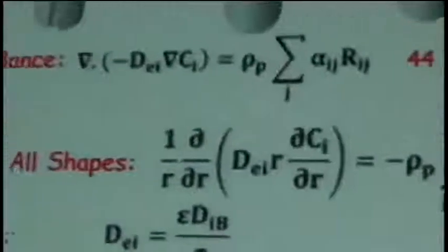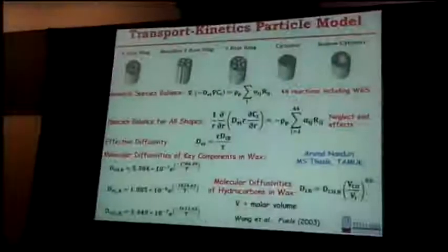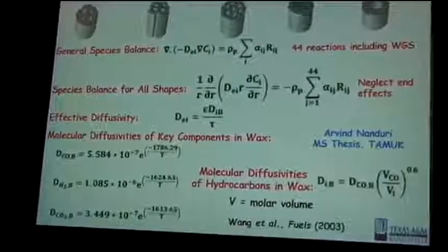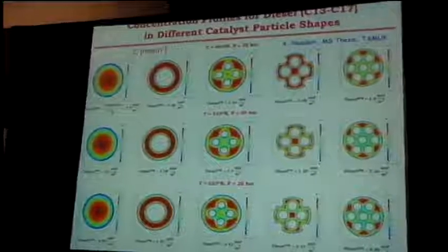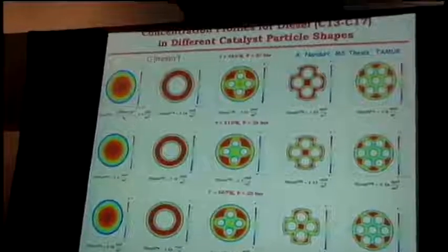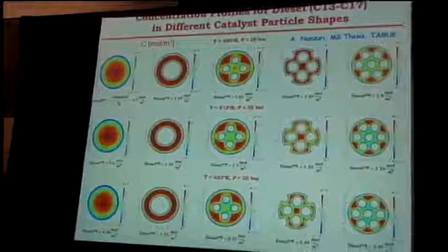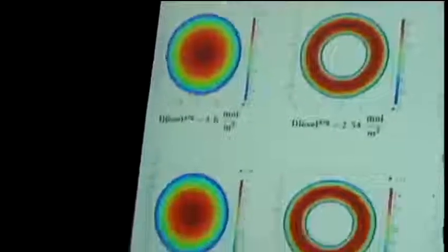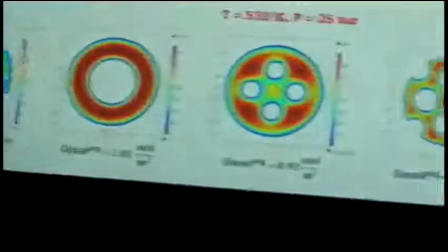Here we show what the transport parameter — the effective diffusivity — is, and some previous work by Wang showed how diffusivity varies for CO, hydrogen, and CO2, and also how they vary as you go to the higher molecular weight components. One can solve these equations and then describe what is the behavior on a local basis within these various types of particles.